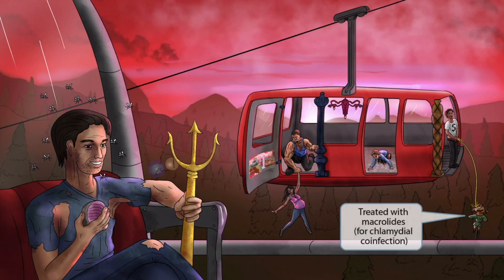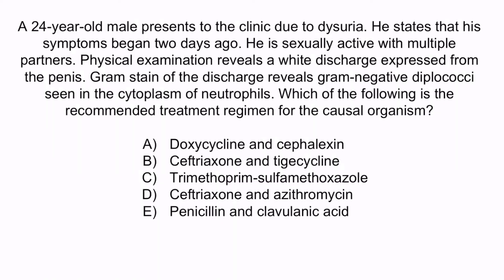Now that we've covered the image, let's review with a question. A 24-year-old male presents to the clinic due to dysuria. He states that his symptoms began two days ago. He is sexually active with multiple partners. Physical examination reveals a white discharge expressed from the penis. Gram stain of the discharge reveals gram-negative diplococci seen in the cytoplasm of neutrophils. Which of the following is the recommended treatment regimen for the causal organism?